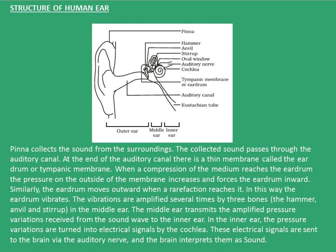The final topic of this chapter is the structure of the human ear. The pinna collects sound from the surroundings and is the outermost part of the ear. The collected sound then passes through the auditory canal. At the end of the auditory canal, there is a thin membrane called the eardrum or tympanic membrane. When the compression of the medium reaches the eardrum, the pressure on the outside of the membrane increases and forces the eardrum inward. Similarly, the eardrum moves outward when a rarefaction reaches it.